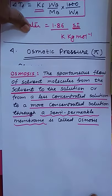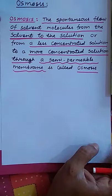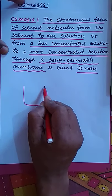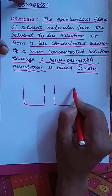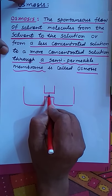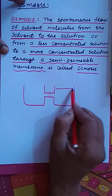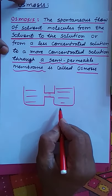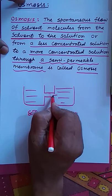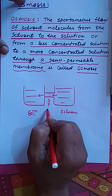If there is a solution and a solvent separated by a semi-permeable membrane, there is a spontaneous flow of solvent molecules from the solvent to the solution through the semi-permeable membrane.